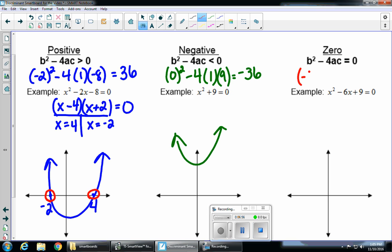b squared, so I have negative 6 squared minus 4 times a is 1, and c is 9. When we type that in our calculator, we'll get 0.